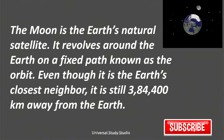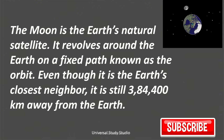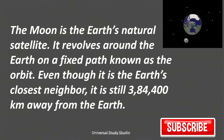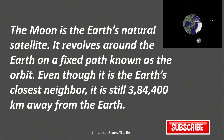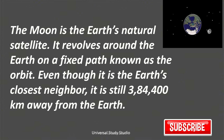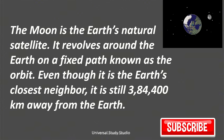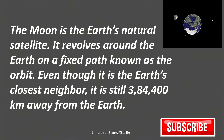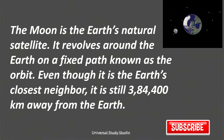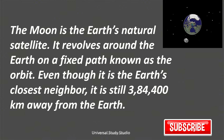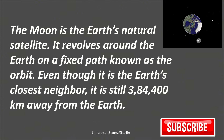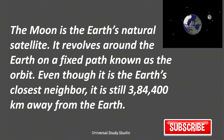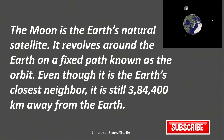The moon is the earth's natural satellite. It revolves around the earth on a fixed path known as the orbit. Even though it is the earth's closest neighbor, it is still 3.84 lakh kilometers away from the earth.